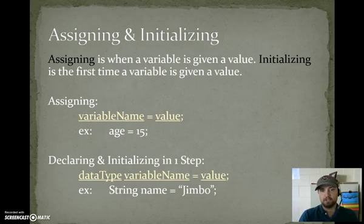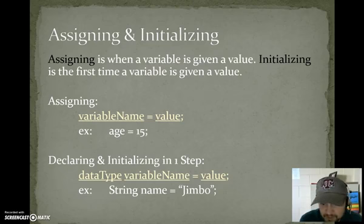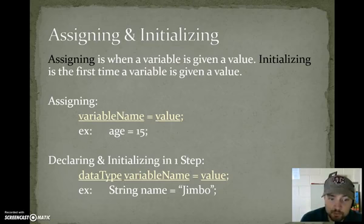Declaring and initializing in one step. Data type variable name equals value. For example, string name equals Jimbo. So Jimbo is the text that's being stored into name, but this is a combination. You're both declaring and assigning, but since it's the first assignment, it's called initialization. So string name is declared and it's initialized with Jimbo in one line of code. Beyond this point, you do not say string name again. Remember, Java will remember that you declared name as a string.